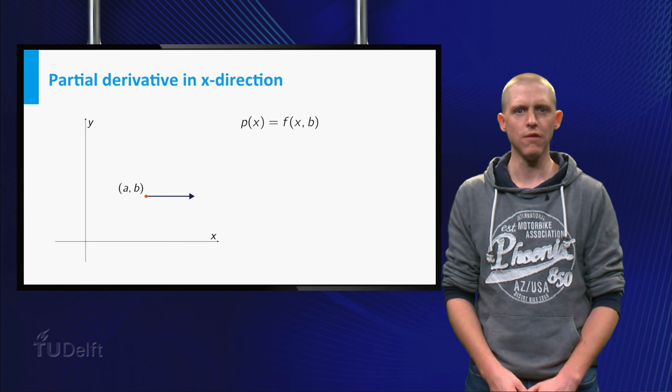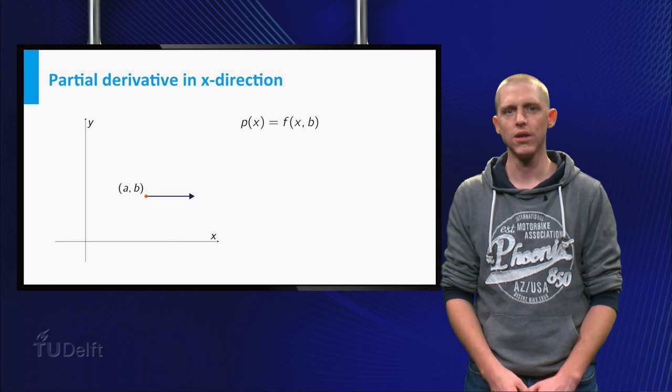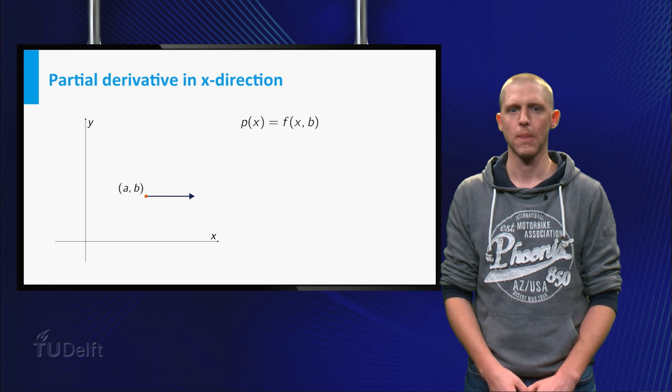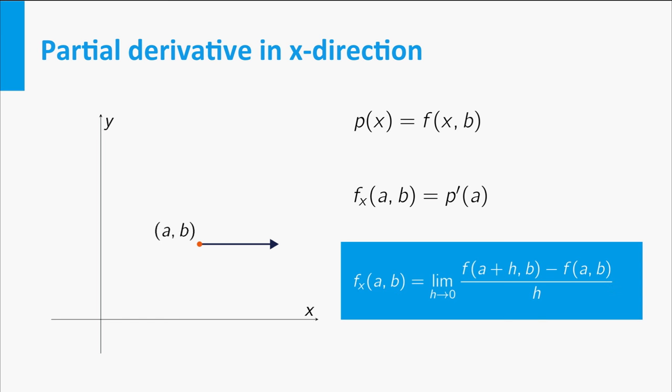The partial derivative of f with respect to x at the point (a,b) is simply defined as p'(a). Instead of p'(a), we use the notation f_x(a,b) for this partial derivative. Using the formula for the definition of p'(a), we arrive at the formula shown for the partial derivative with respect to x.